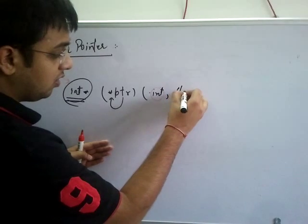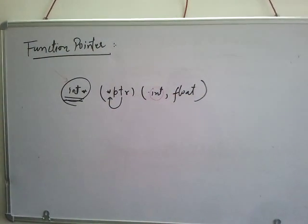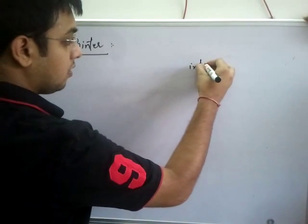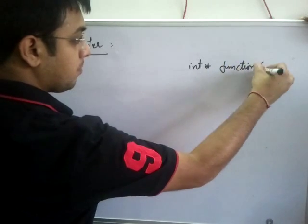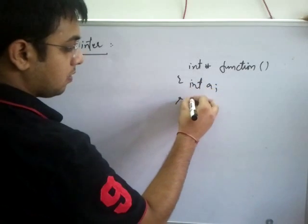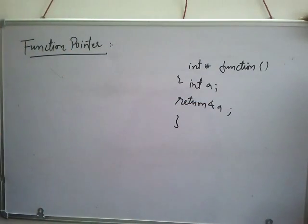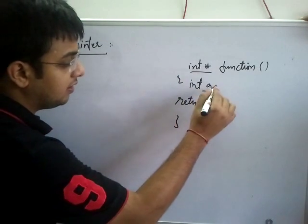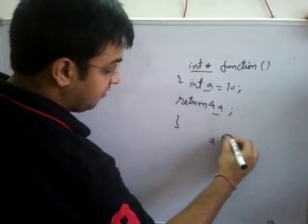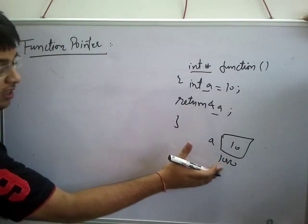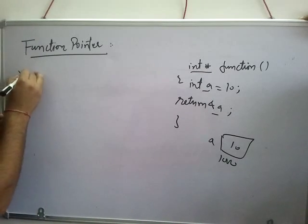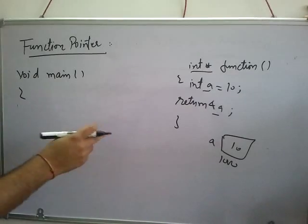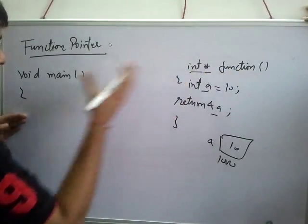You can create your function pointer like this. Let's say I have a function. How do you think it will return an address? So let's say this address is 1000. So this function has address 1000. What do I want to do? I want one pointer which will point to this function, and I will call this function using the pointer. Obviously I have to create a pointer. By looking at this function, how will you create a pointer? First of all, these two brackets.